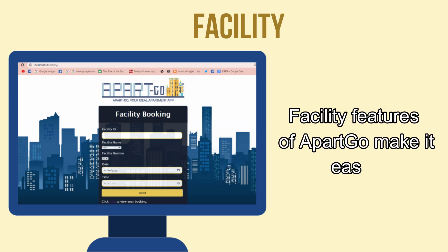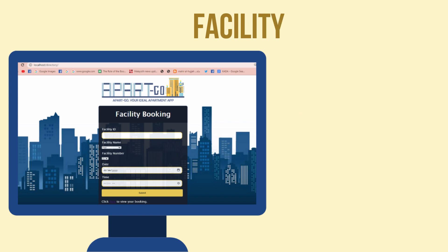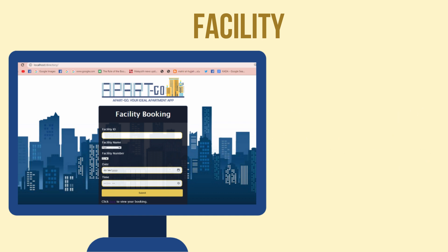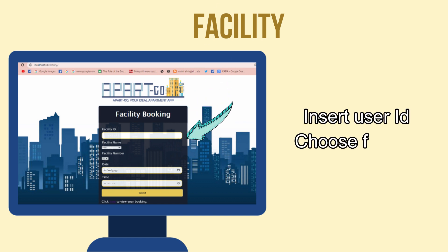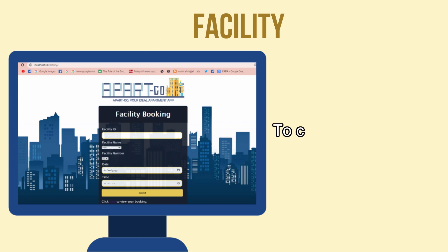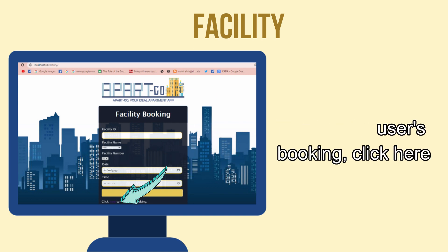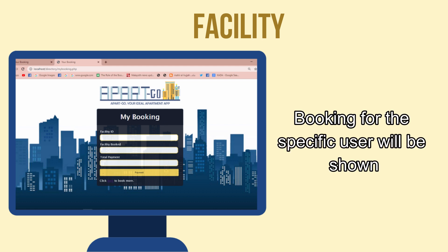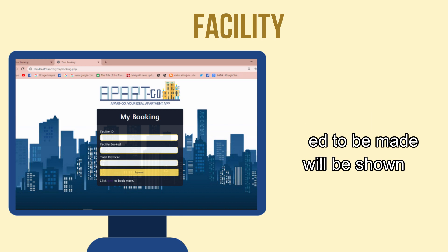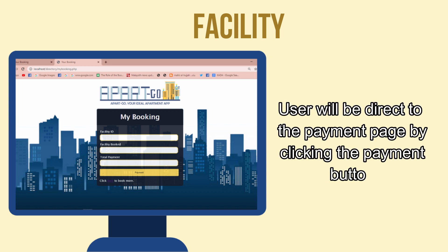The facility feature of Park Goal will make it easier for apartment residents to book facilities provided by the management. The user just needs to insert their user ID, choose the facility they want, and click the date and time they want to use the facility. To confirm the booking, click Submit. To view the user's booking, click here, and the booking for the specific user will be shown. The total payment to be made will be shown, and the user will be directed to the payment page by clicking the Payment button.